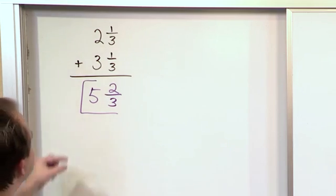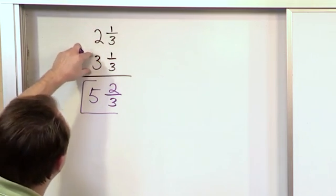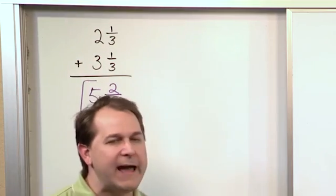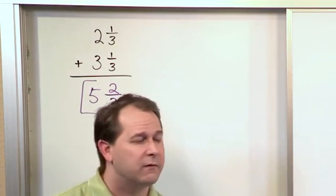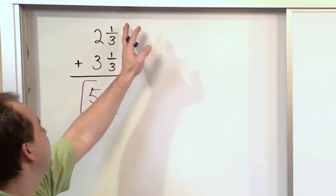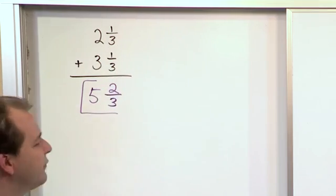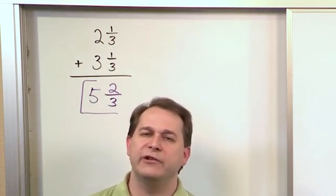It makes sense to you that if you have two pizzas here and three pizzas here, you're going to have five whole pizzas, right? Then we need to add the fractional parts. Here's a third, here's a third, so we'll have ⅔. So if we add everything together, we should have 5⅔.